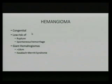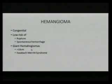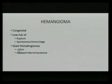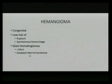Hemangioma is the next lesion — again, congenital in origin. They carry a very low risk of rupture or spontaneous hemorrhage. Giant hemangiomas are defined as greater than 10 centimeters according to Cameron, though some texts say greater than 4 centimeters. Giant hemangiomas can be associated with Kasabach-Merritt Syndrome, which presents with DIC and thrombocytopenia.